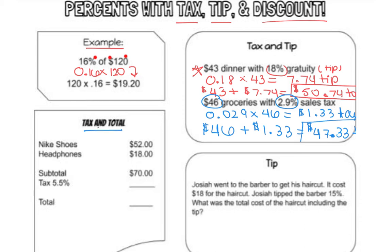Now for this tax and total, we have Nike shoes for $52 and headphones for $18, giving a total cost of $70. Sales tax is 5.5%, so we need to find 5.5% of $70. Make 5.5% a decimal by moving the decimal two places to the left: 0.055 times $70, which gives $3.85 in tax.